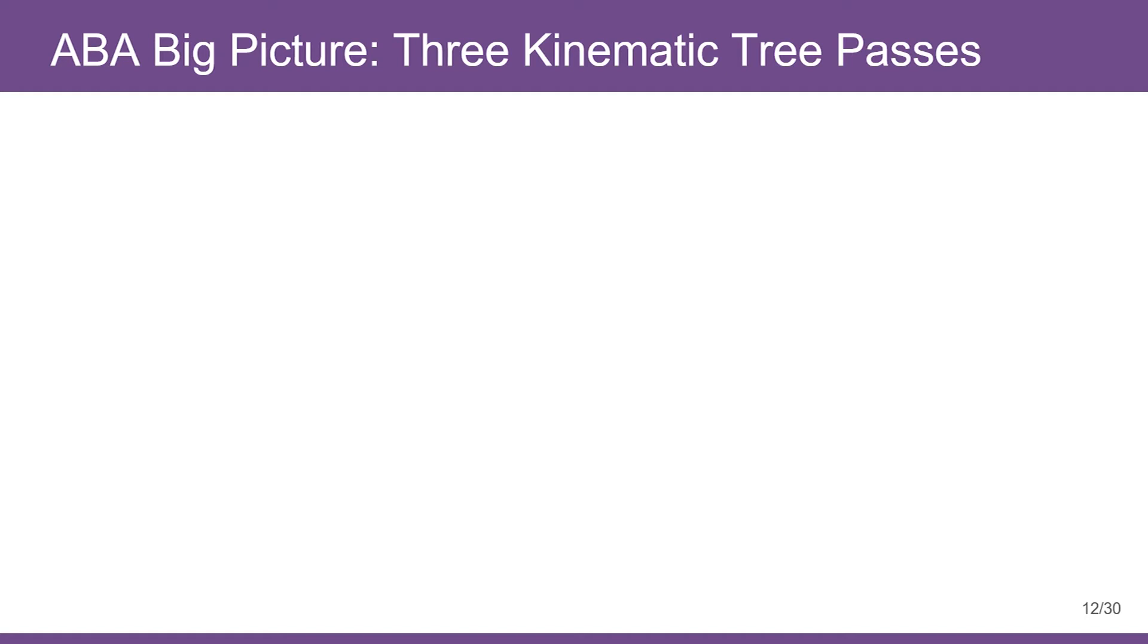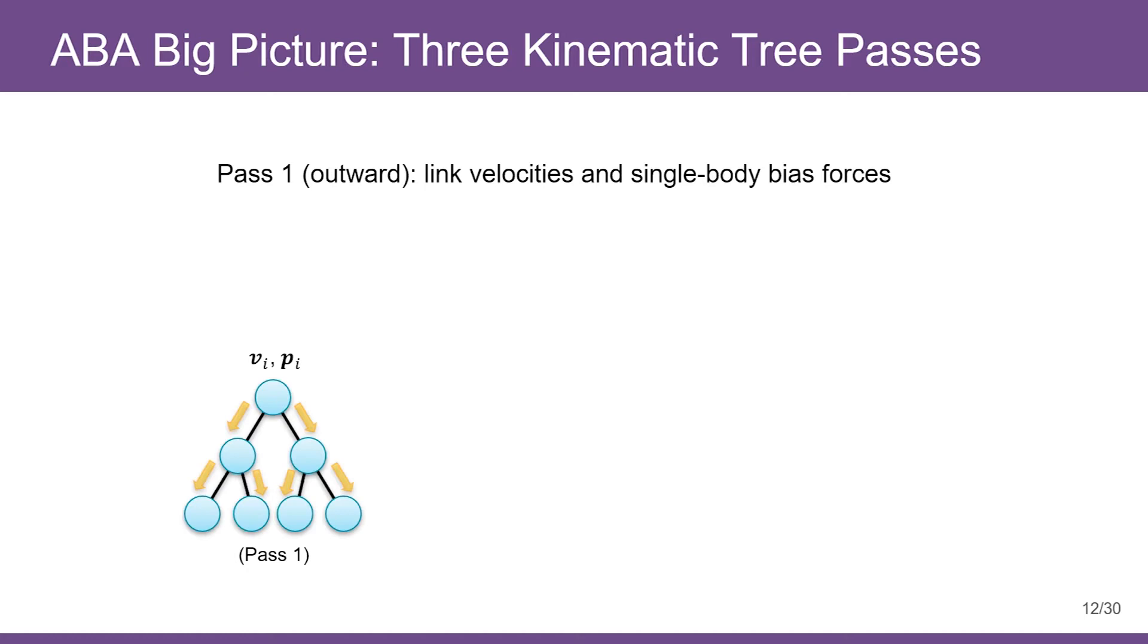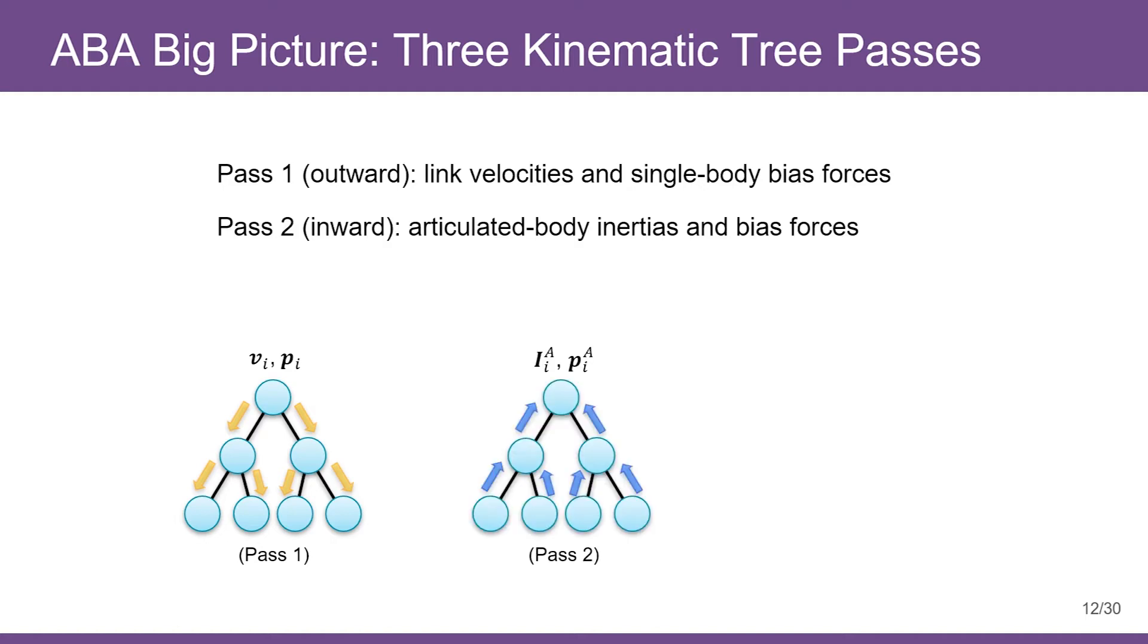Specifically, ABA makes three passes to the kinematic tree. The first pass is outward, where link velocities and single-body bias force terms are computed from root to leaves. The second pass is inward, where articulated body inertias and bias forces are computed from leaves to root. The third pass is outward again for computing link and joint accelerations.